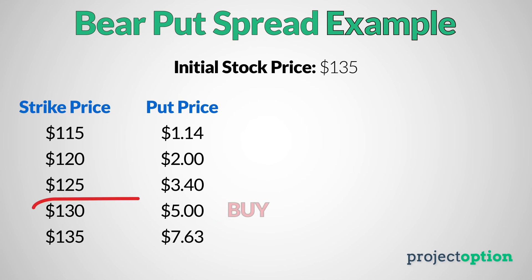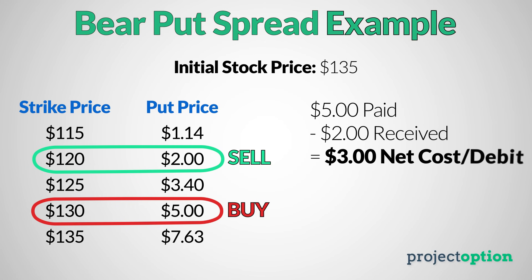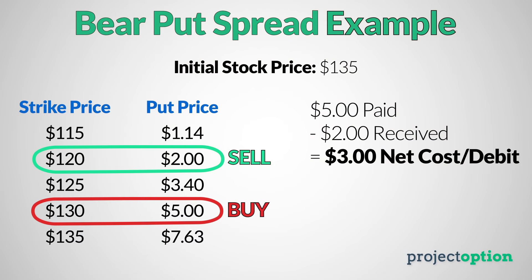I'm going to buy the 130 put option for $5, and then sell the 120 put option for $2. Since I paid $5 for the 130 put and received $2 for selling the 120 put, the net debit paid in this example is $3. In options trading, if you pay more premium than you receive when entering a position, you are said to enter the position for a net debit. A trader would say that they are purchasing the 130-120 put spread for a net debit of $3.